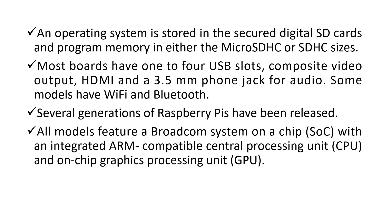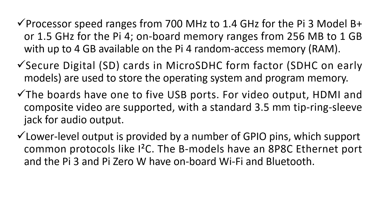Several generations of Raspberry Pi have been released. All models have a SOC with integrated ARM-compatible CPU and GPU. The processor speed ranges from 700 MHz to 1.4 GHz for the Pi 3 model. Onboard memory ranges from 256 MB to 1 GB. SD cards in micro SDHC format are used to store the OS and program memory. Various USB ports are available and lower-level output is provided by the GPIO pins.